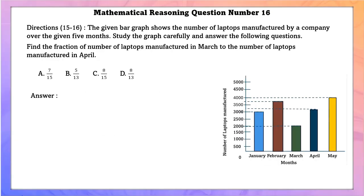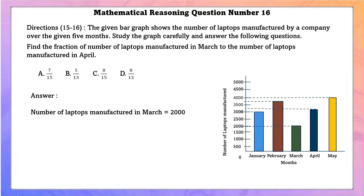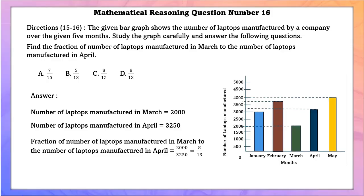Mathematical reasoning question number 16. Find the fraction of the number of laptops manufactured in March to the number manufactured in April. March: 2,000 laptops; April: 3,250 laptops. The fraction is 2,000 by 3,250, which simplifies to 8 by 13.